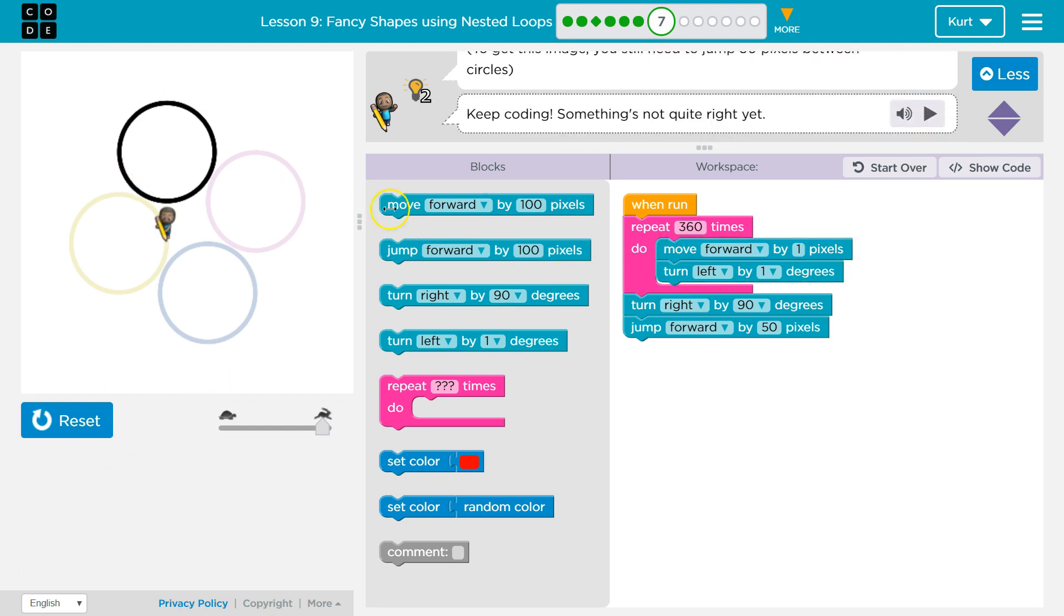And now it's going to be done. So once it runs this 360 times, we drop below it, and it runs whatever code's here, which is to turn 90 degrees and jump again. So now, we have four circles.